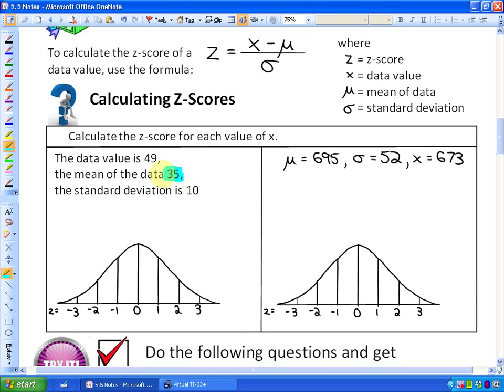So a mean of 35 would have a middle of 35, and a standard deviation of 10 means that we would go up by tens as we went up by one standard deviation, and vice versa, down by tens.